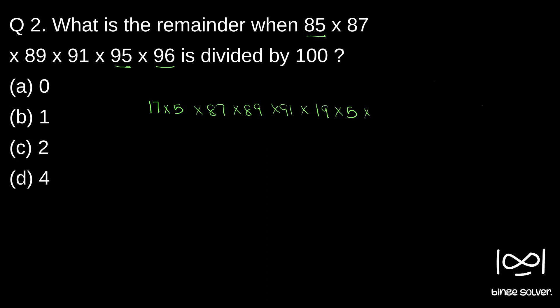And 96, I write as 4 × 24. 96 divided by 2 is 48, 48 divided by 2 is 24. So 4 × 24.